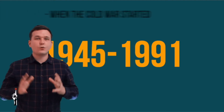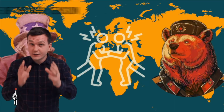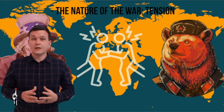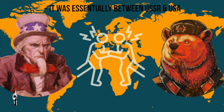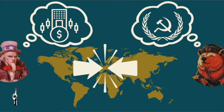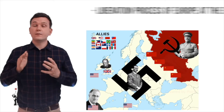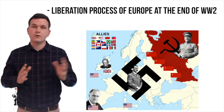We looked at when the cold war started. We looked at the main characteristic of the cold war and tension, and we talked about the fact that the tension was essentially between the USSR and the USA. Then we talked about their ideological differences: communism versus capitalism. Then we talked about the liberation process of Europe by the Soviet Union and the USA and other allies.